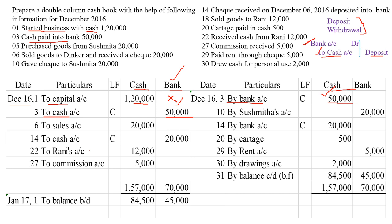In a contra entry, when cash is deposited, cash goes out — so in the credit side, in the cash column, we are writing 50,000. For the banker, cash comes in — so under the bank column, we are writing 50,000 rupees. And we will write the word C in the LF column. C stands for contra. Both in the debit side and the credit side, we will use the word C — capital C — which stands for contra entry.